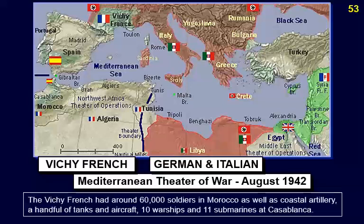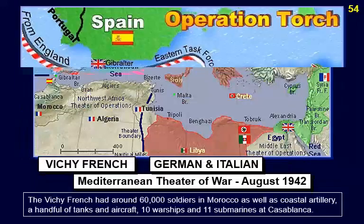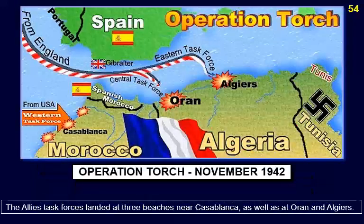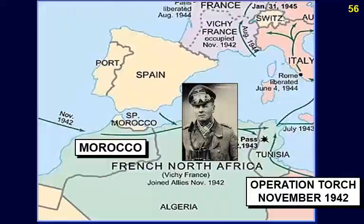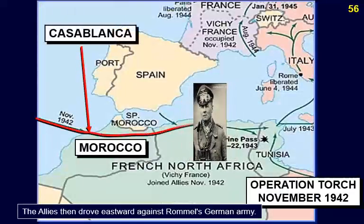The Vichy French had around 60,000 soldiers in Morocco, as well as coastal artillery, a handful of tanks and aircraft, 10 warships, and 11 submarines at Casablanca. The Allied task forces landed at three beaches near Casablanca as well as at Oran and Algiers. The allies landed on November 8th, 1942, and soon forced the capitulation of the Vichy regimes in Morocco and Algeria. The allies then drove eastward against Rommel's German army.